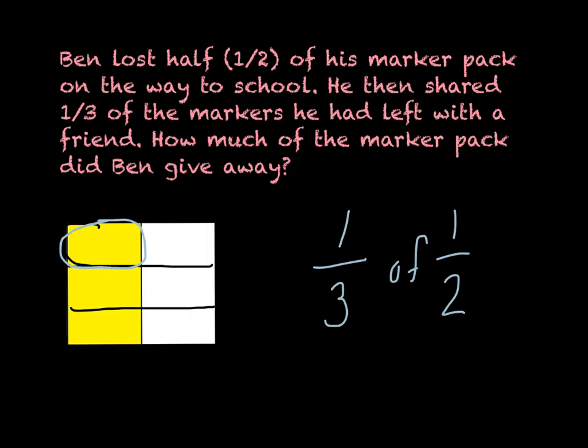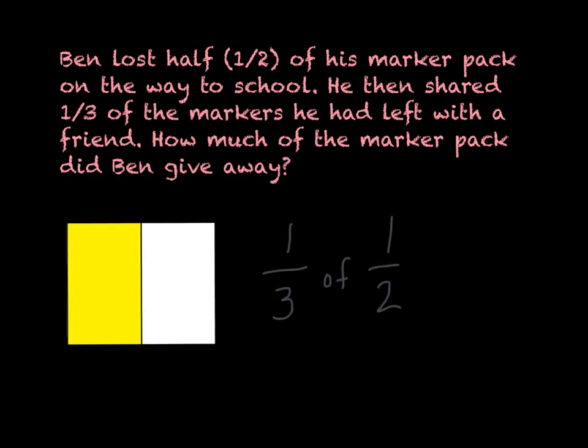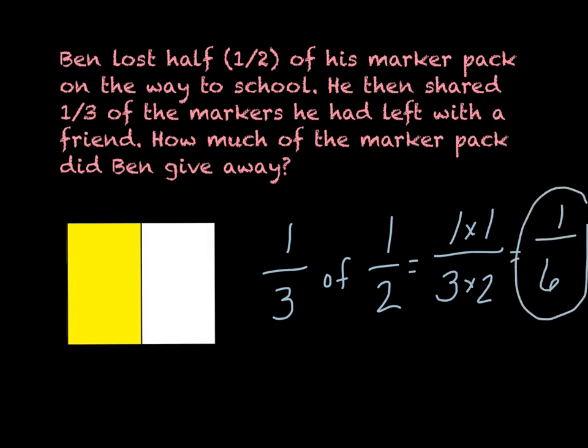If we wanted to do this procedurally, we would multiply our numerators, one times one, and then multiply our denominators, three times two, and we would get our answer and find out that Ben had given away one-sixth of the marker pack.